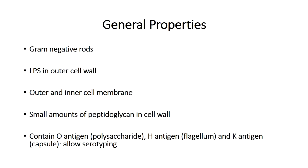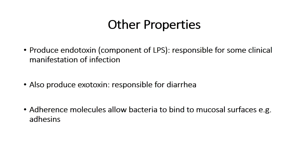There are also other properties to consider in terms of how they cause disease. Gram-negative bacteria produce endotoxins — the endotoxin is a component of the lipopolysaccharide part of the cell structure itself. This can lead to many of the clinical features of inflammation and infection seen in infected patients. These gram-negative rods will also produce exotoxins.